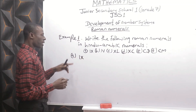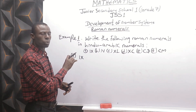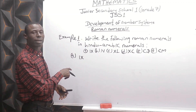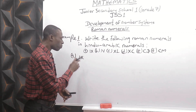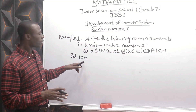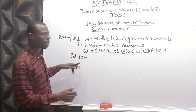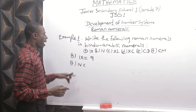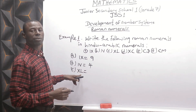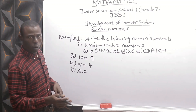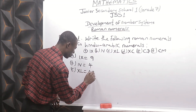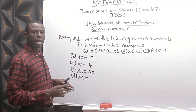IX: I is smaller and comes before X, so subtract 1 from 10 — that gives 9. IV: subtract 1 from 5 — that gives 4. XL: X is 10, L is 50, smaller before bigger, subtract 10 from 50 — that gives 40. XC: X is 10, C is 100, subtract 10 from 100 — that gives 90.